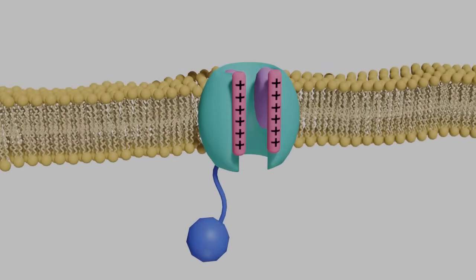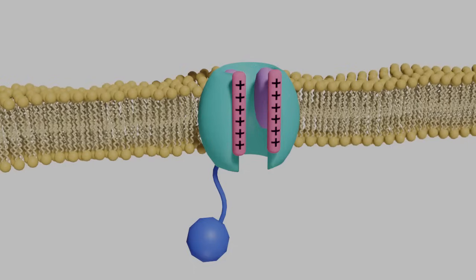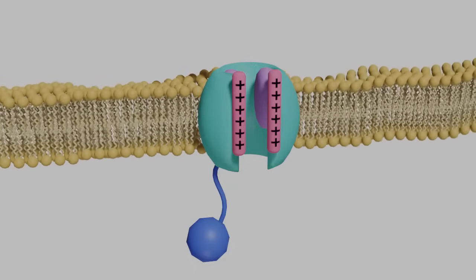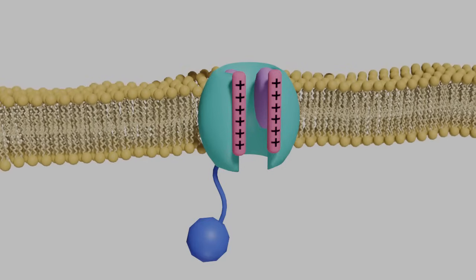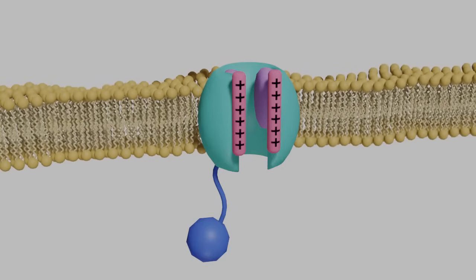Here's our voltage-gated sodium channel. You can see the voltage sensors colored in pink in this animation. Because the voltage sensors are positively charged, they're repelled by other positive charges.